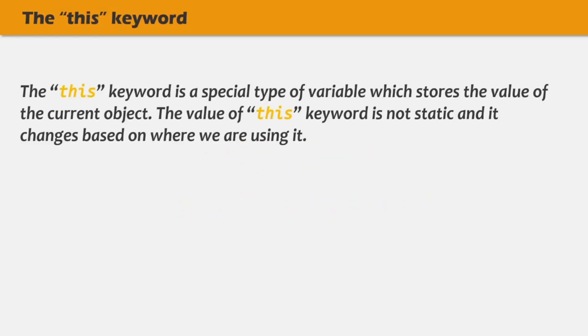The 'this' keyword in JavaScript is a special type of variable which stores the value of the current object. The value of 'this' keyword is not static — it changes based on where we are using it. Its value is also determined at runtime; at compile time, we don't know the value of 'this'.